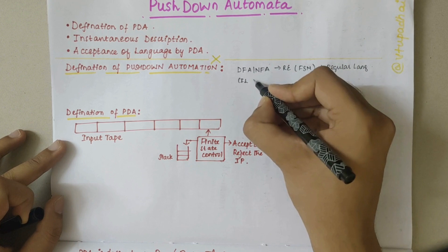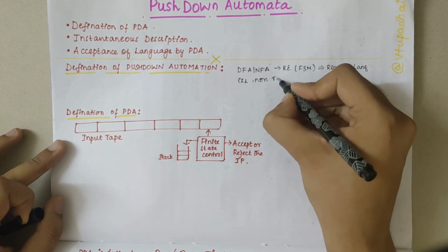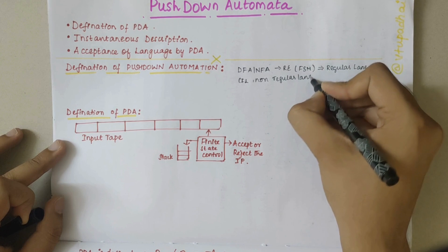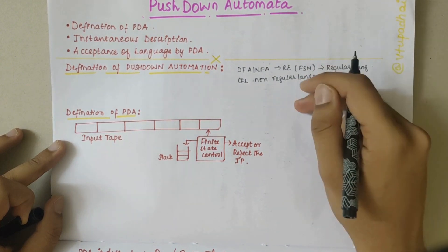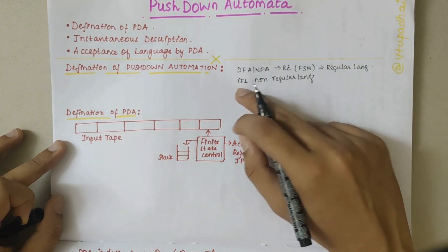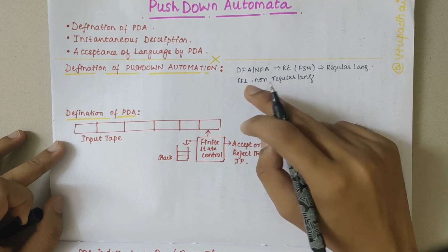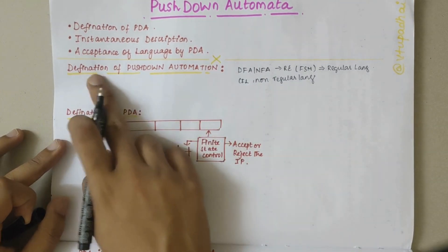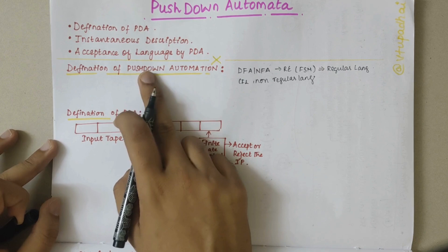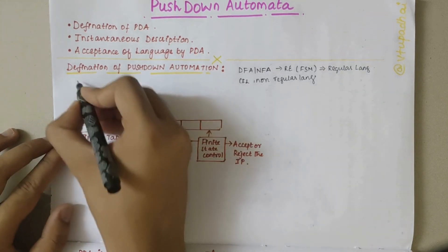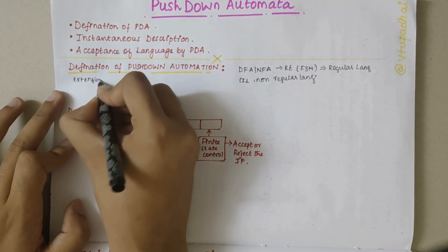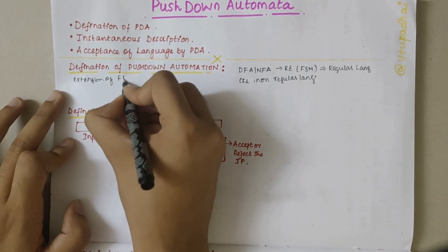FSM cannot model some languages — they are non-regular languages. The CFL consists of automation that defines these non-regular languages. The automation that defines these non-regular languages is called pushdown automation, and it is an extension of FSM.